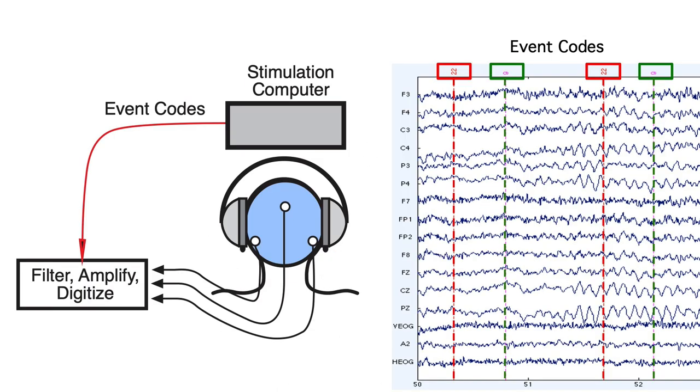So most labs use two computers, one that presents the stimuli and records the responses, and another that records the EEG. The stimuli are usually auditory or visual, but some studies use somatosensory, olfactory, or even gustatory stimuli.